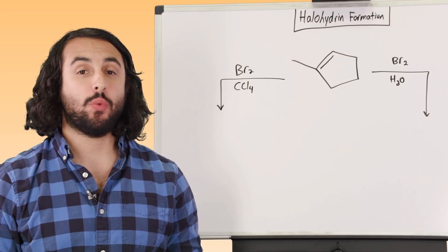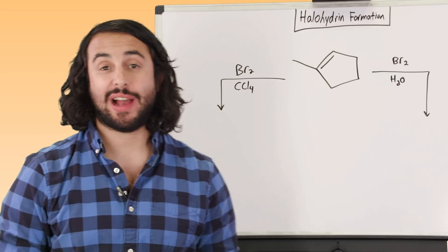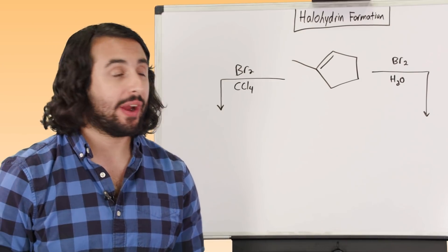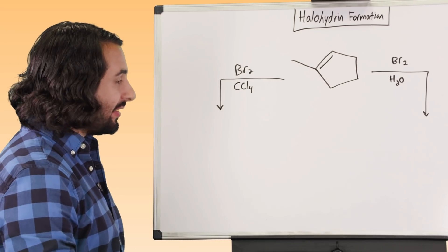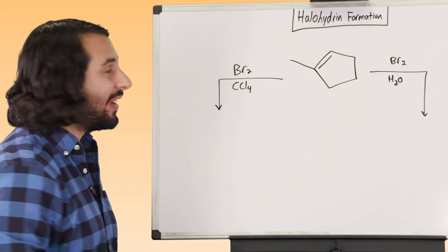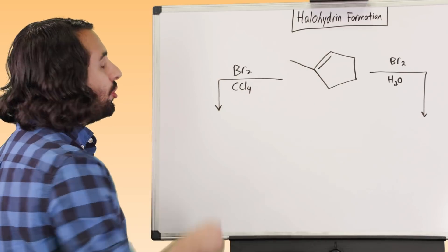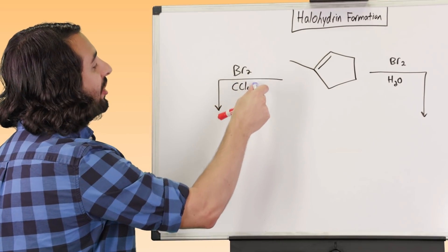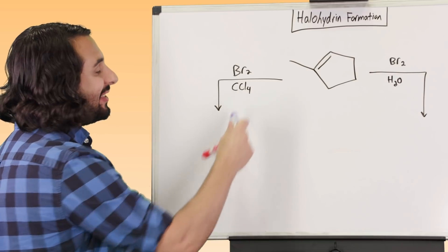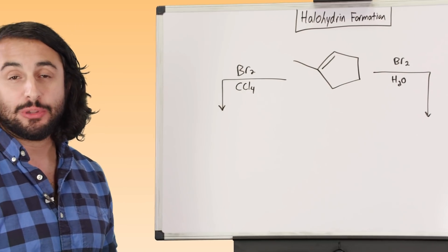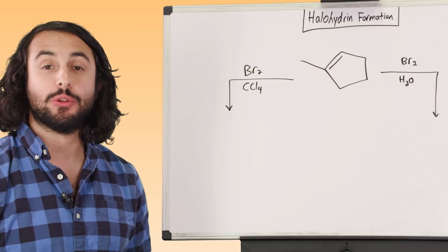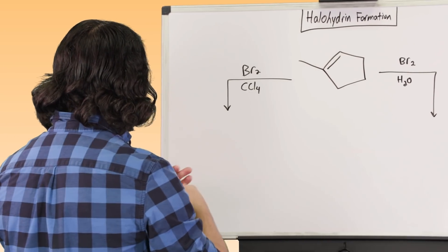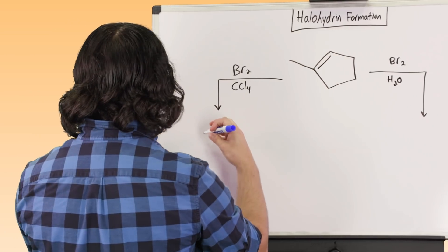Before we move on, there's actually one more thing to discuss regarding halohydrin formation. There's actually some regiochemistry that we want to be aware of. And so that's going to go like this. We know if we have this molecule right here, we've got this alkene. Let's say we just do a regular dihalogenation. Remember, this is going to be a regular dihalogenation because of this inert solvent. CCl4 or something similar is not going to interfere with the reaction. We're going to be able to get our dihalogenated product. Solvent molecules will not interfere.